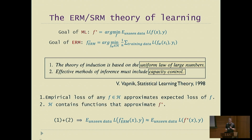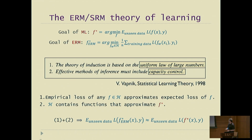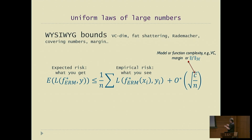Uniform laws of large numbers are what you may call 'what you see is what you get' bounds. On the left of the inequality you have the expected risk — this is what you get, what the future holds. On the right, you have the empirical risk — what you see on your training data — plus a capacity term. This term is usually something like square root of C over N, where C is a measure of the capacity of your class. It may be a margin, it may be VC dimension — there are a number of different ways to measure this.